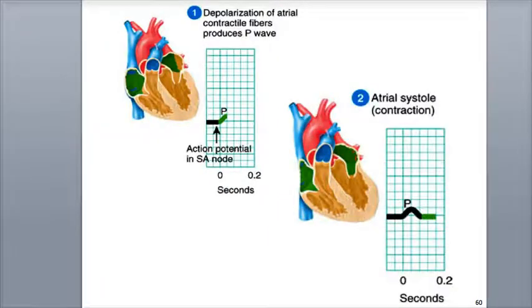Let's now correlate the ECG with the timing of the heart's contraction. We'll base it on the resting heart rate of an average adult, which is 75 beats per minute. In the diagrams, green represents depolarization, and red represents repolarization.